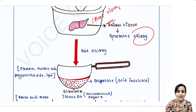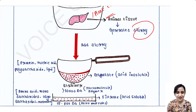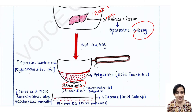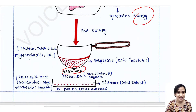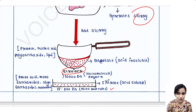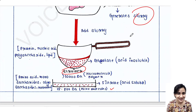Next, you take a strainer and put that slurry into it, keeping a flask or bowl beneath the strainer, and you strain the slurry that you have got from the tissue.